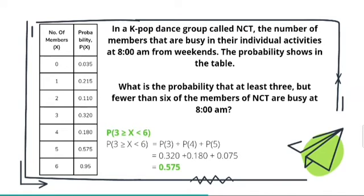What is the probability that at least 3 but fewer than 6 of the members of NCT are busy at 8 a.m.? Finding the probability of P(3 ≤ X < 6). So probability of 3 is 0.320, plus probability of 4 is 0.180, plus probability of 5 is 0.075, which equals 0.575.